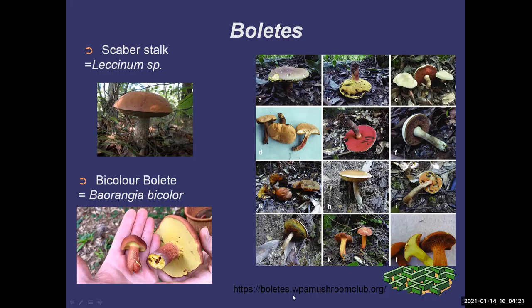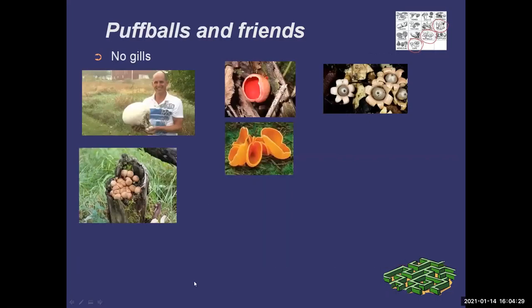There's a really great webpage that's a resource for identifying boletes — I'll let you explore that on your own. Our next family is puffballs. The giant puffball is another beginner mushroom — it's the first one I ever foraged and ate without worrying about poisonous look-alikes, because there are no poisonous look-alikes.